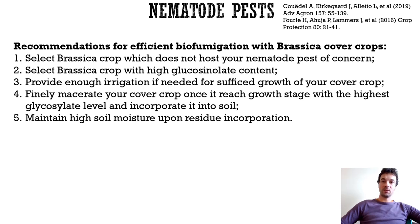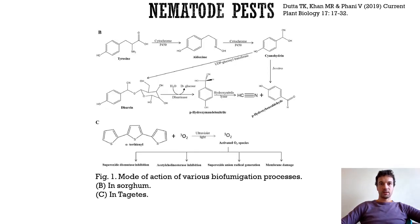Subsequent soil tarping with plastic film can additionally increase efficiency of biofumigation by preventing rapid emission of volatile nematicidal compounds from soil to atmosphere and by creating sublethal soil temperatures if done in summer — high temperature has a synergistic effect on nematode killing. Biofumigation is effective when parasitic nematodes are present in their active, motile life stage in soil. Other cover crops with nematicidal effects include graminaceous plants such as sorghum and pseudograss, Tagetes marigold, clover, flax, and some plants in the Compositae family including chrysanthemum and safflower.